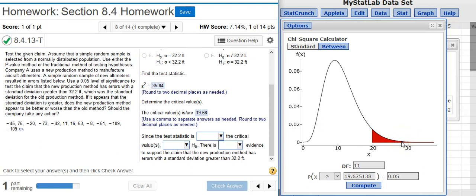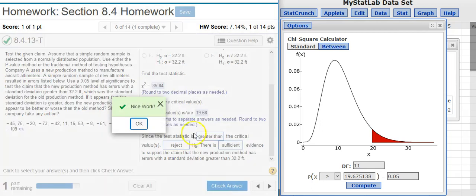Therefore I'm going to reject the null hypothesis. My test statistic is greater than the critical value—it's the only way to get inside the critical region for a right-tailed test. Because I'm rejecting the null hypothesis, there is sufficient evidence to support the claim.